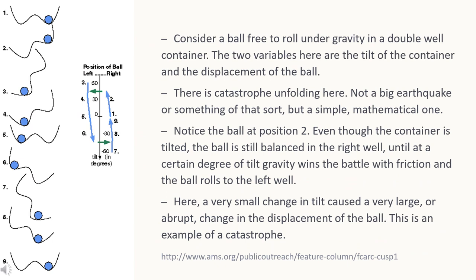Consider a ball free to roll under gravity in a double well container. The two variables here are the tilt of the container and the displacement of the ball. There is a catastrophe unfolding here — not a big earthquake or something of that sort, but a simple mathematical one.